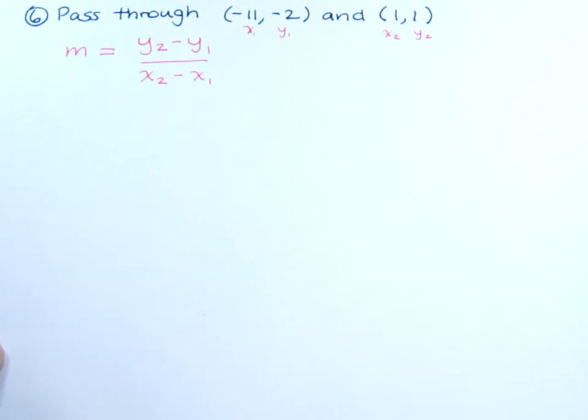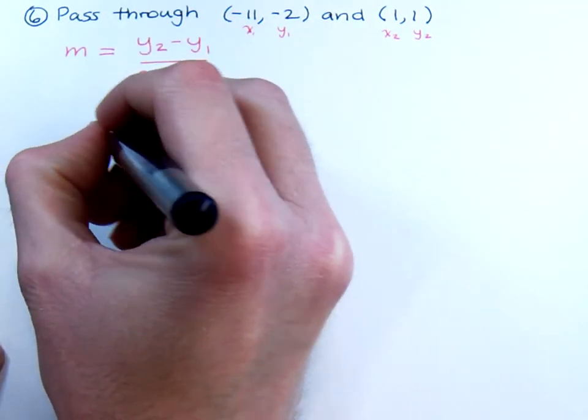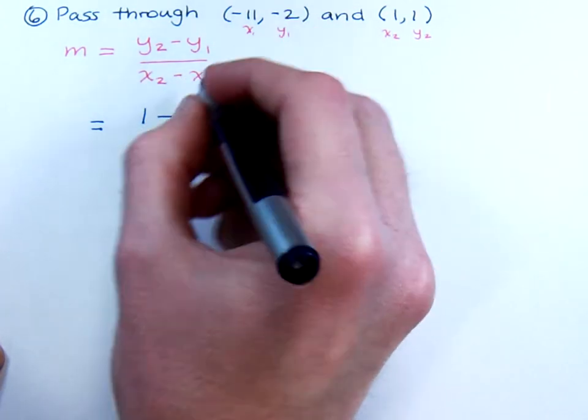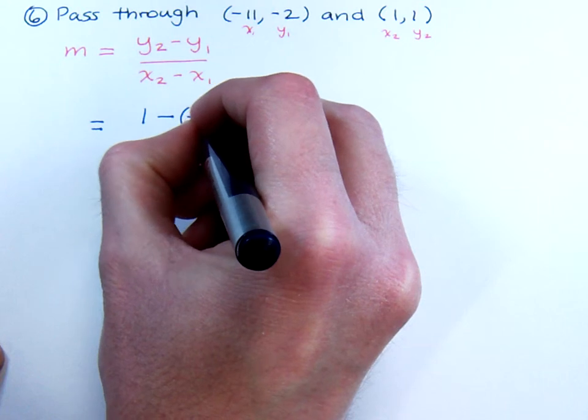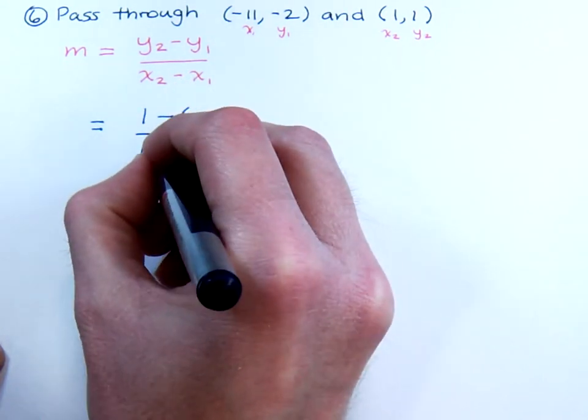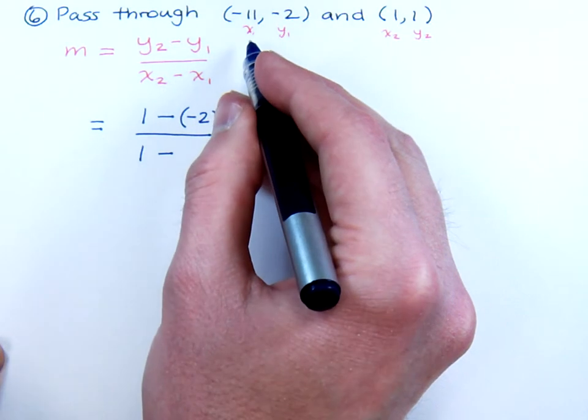And then just plug into the formula. So plugging into the formula, y₂ is 1 minus y₁, which is negative 2, so use those parentheses, over x₂ is 1 minus your x₁, which is negative 11.